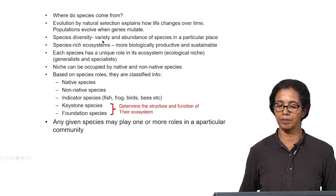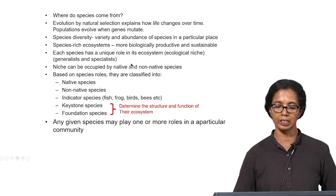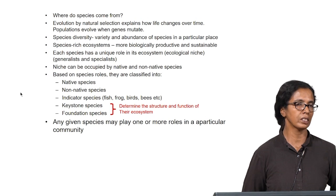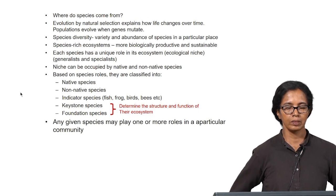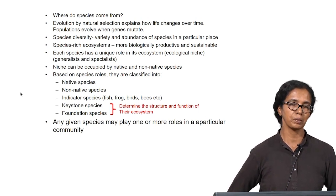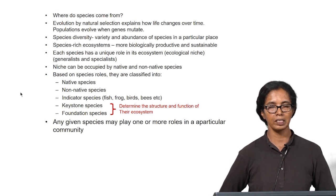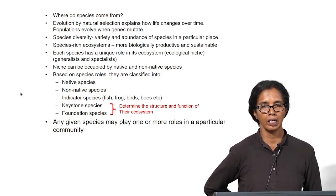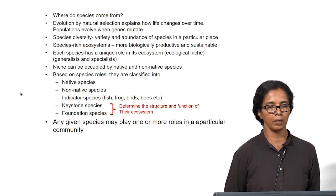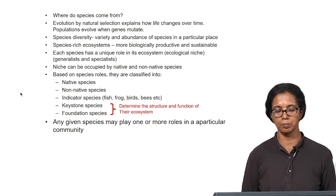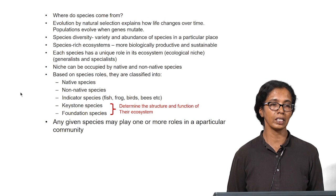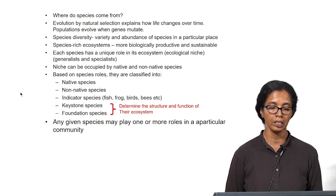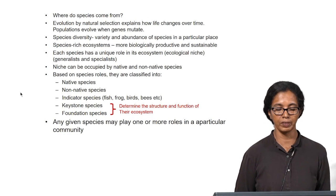Species diversity is nothing but the variety and abundance of species in a particular place. Variety refers to the number of species you see; abundance is the number of members of a particular species. Biodiversity is expressed using a quantity that has both components — the number of species as well as the number of members in each species — and both must be taken into account to estimate biodiversity.